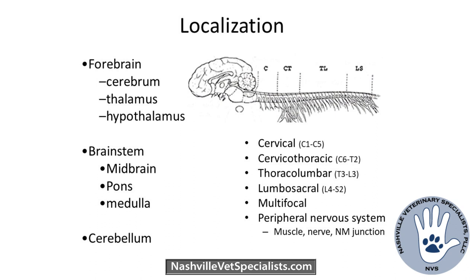We break it down to these locations: is it intracranial? If intracranial, there are pretty different signs for a forebrain lesion — something in the cerebrum or thalamus — versus brainstem or cerebellum. If not intracranial and it involves the spinal cord, try to localize it to upper cervical, lower cervical, TL, or lumbosacral. Also don't forget: sometimes a lesion doesn't fit those categories — we might be dealing with the peripheral nervous system, a muscle disorder, a primary nerve disorder, or the neuromuscular junction. We can also see multifocal lesions.